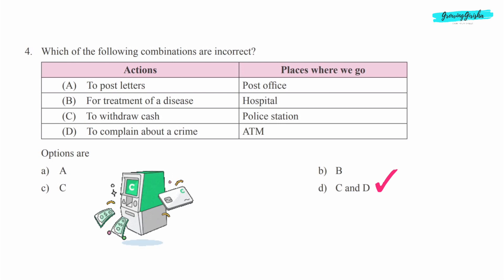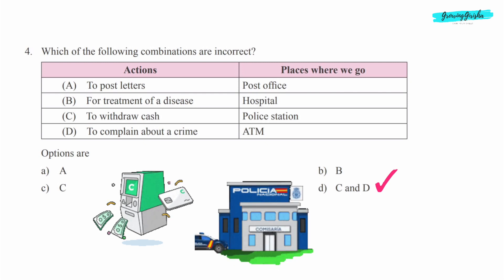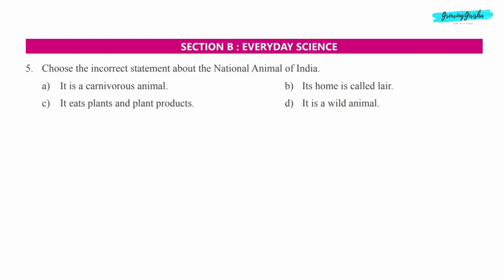Section B: Everyday Science. Question number 5: Choose the incorrect statement about the national animal of India.